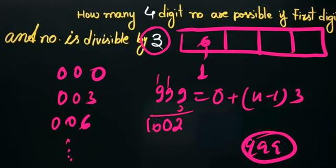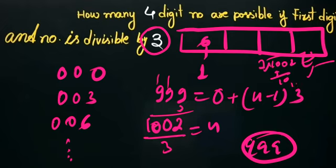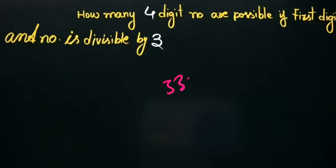This will be 1002, and dividing by 3 gives the number of terms. We put 1002 divided by 3, which gives 334. The answer will be 334 numbers possible.